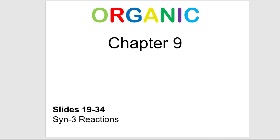Chapter 9, slides 19 to 34. In the previous set of slides where we reacted an alkene with an acid like H2SO4 or HCl, what I want you to notice is that we always start with the nucleophile being the pi bond and we attacked the hydrogen and the leaving group left. Ultimately this gave us a carbocation. We added the hydrogen on the right in this case, putting the carbocation at the more substituted position.